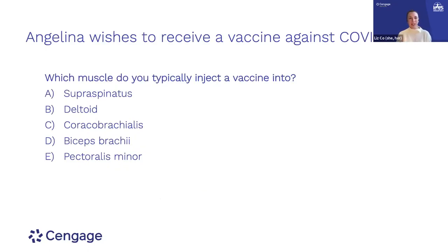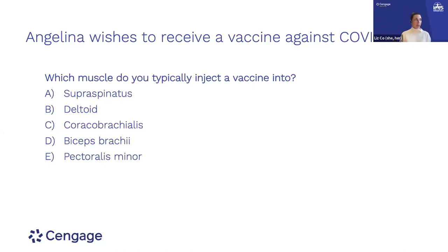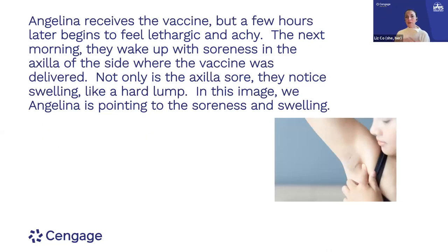One of my students, whose name truly is Angelina, got her COVID vaccine and then told me that afterwards she had a very sore pec minor. I had the idea of going through the anatomy of this area — since we would be doing a review already in the immune system section — asking which muscle we would typically inject a vaccine into and letting students remember where those different muscles are. Then we have our case study student go get the vaccine. A few hours later, she begins to feel lethargic and achy — our cue to start talking about how symptoms are really indicators of the immune system response.